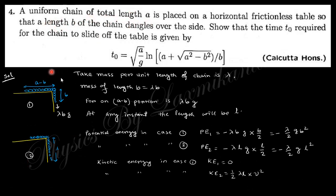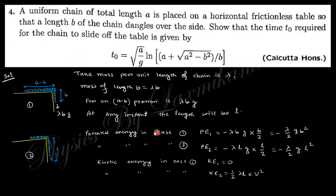Question four: a uniform chain of total length a is placed on a horizontal frictionless table so that a length b hangs over the side. Find the time t₀ required for the chain to slide completely off the table. Take mass per unit length as lambda, so the hanging mass is lambda·b with gravitational force lambda·b·g acting on it.